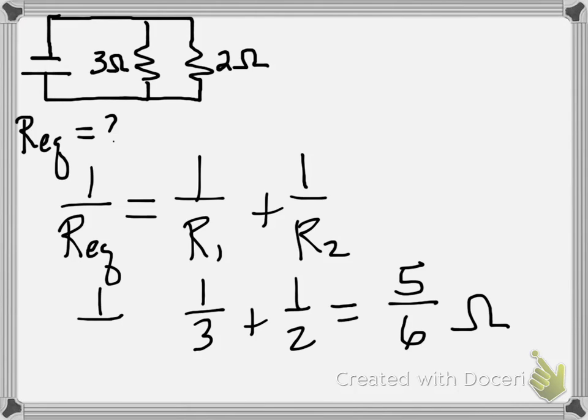Okay, so we know that 1 over the equivalent resistance is equal to 1 third plus 1 half, or 5 sixths. So the equivalent resistance is equal to 6 over 5 ohms. If you give me a fraction like that, that's not good. You have to give an actual number.